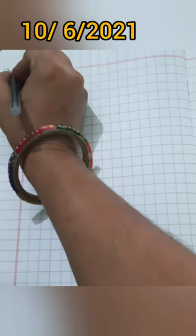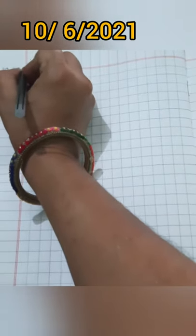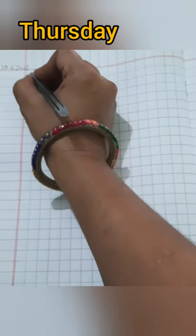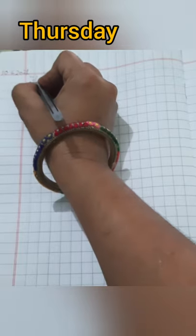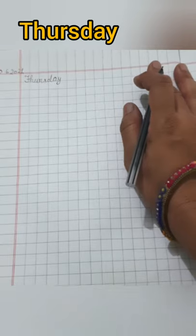So mention date. What is the date today? 10 June 2021. And what is the day? Thursday. T-H-U-R-S-D-A-Y Thursday.